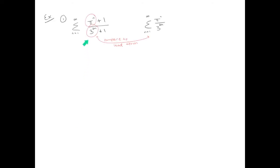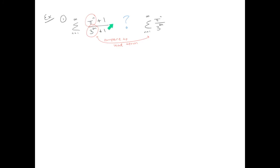Let's do an example similar to the previous comparison tests, using lead terms for numerator and denominator to get the simplified series. What's the inequality between the two series? The numerator is bigger on the left, suggesting the left is bigger; but the denominator on the left is also bigger, suggesting it's smaller. We have two competing interests, so we cannot complete the inequality. This is why direct comparison doesn't work here — the numerator says greater than, the denominator says less than. So we use the limit comparison test instead.